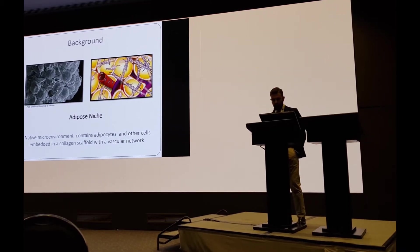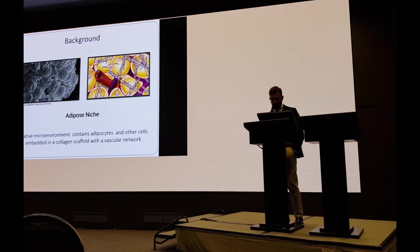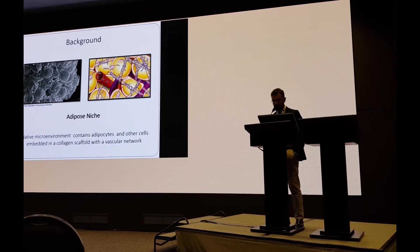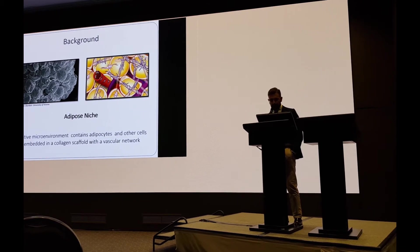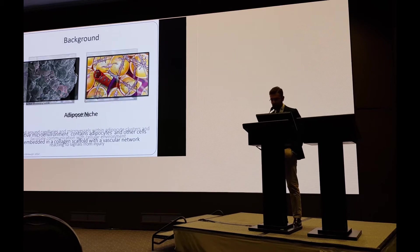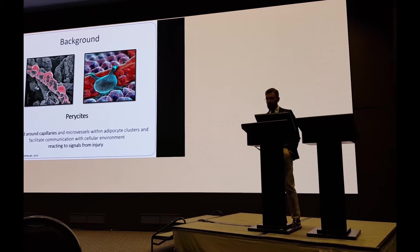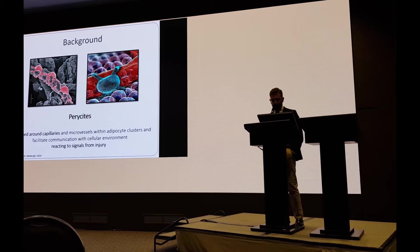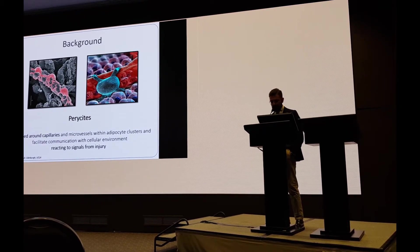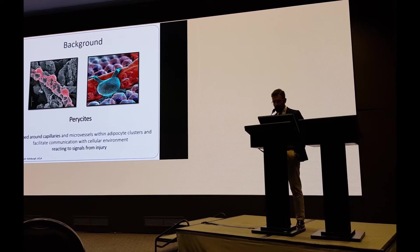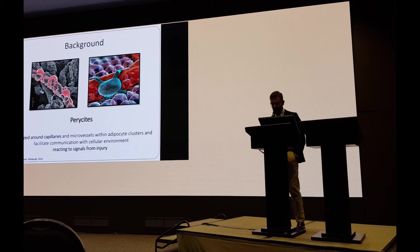The adipose tissue is composed by the adipose niche, that is the native microenvironment, which contains adipocytes and other cells embedded in a collagen scaffold with a vascular network. But the main role is played by the pericytes. Pericytes are wrapped around capillaries and microvessels within adipocyte clusters and facilitate communication with cellular environment, reacting to signals from injury.